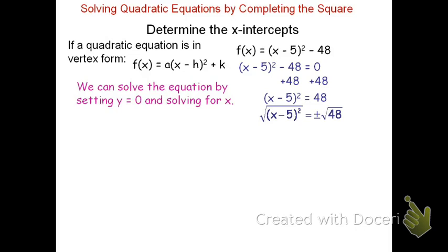That's because positive √48 times positive √48 is 48, but also a negative √48 times a negative √48 would also be 48. So remember, when you square root a square, you go plus or minus. The square and the square root cancel, and we're left with x - 5 = ±√48.